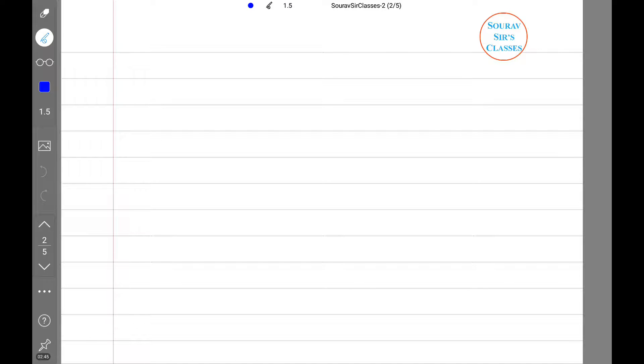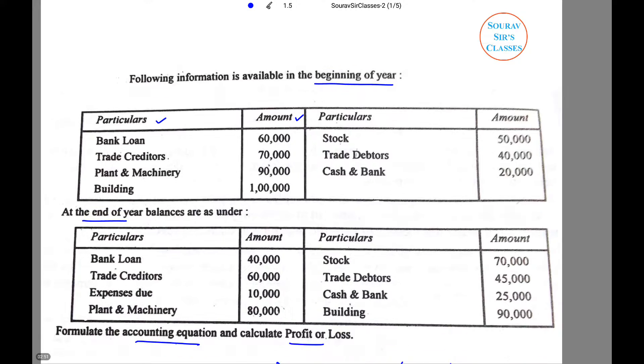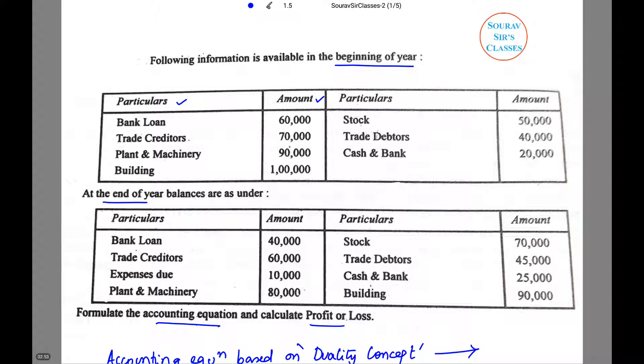What we need to do first is we will add all the assets. So let us check what are the assets given to us. The assets are plant and machinery, building, stock, trade debtors, cash and bank.